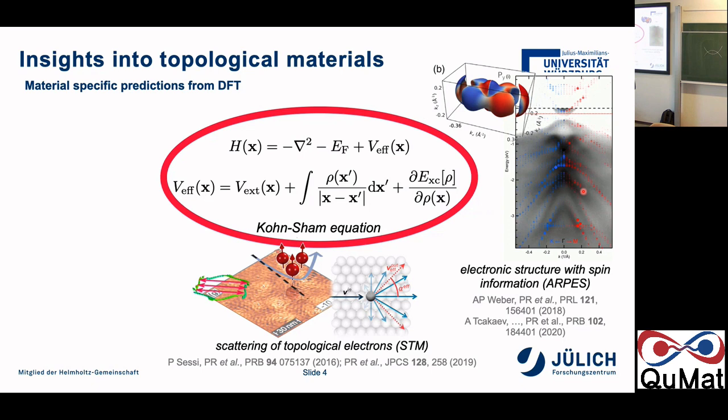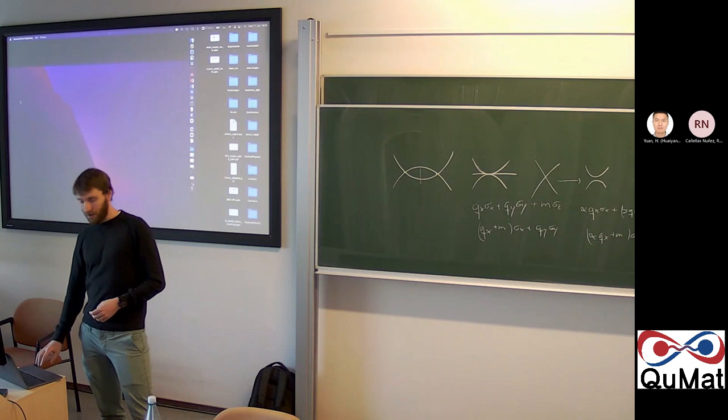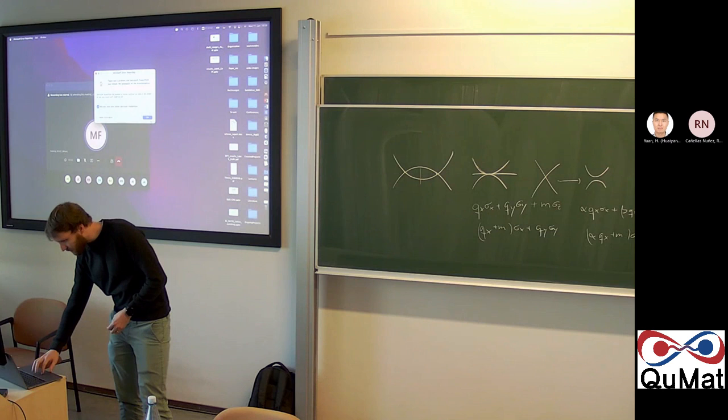We also have access to magnetic interactions and can predict how magnetic atoms order if they are in a certain crystalline environment. This is something which can be retrieved from angle-resolved measurements and XMCD measurements.